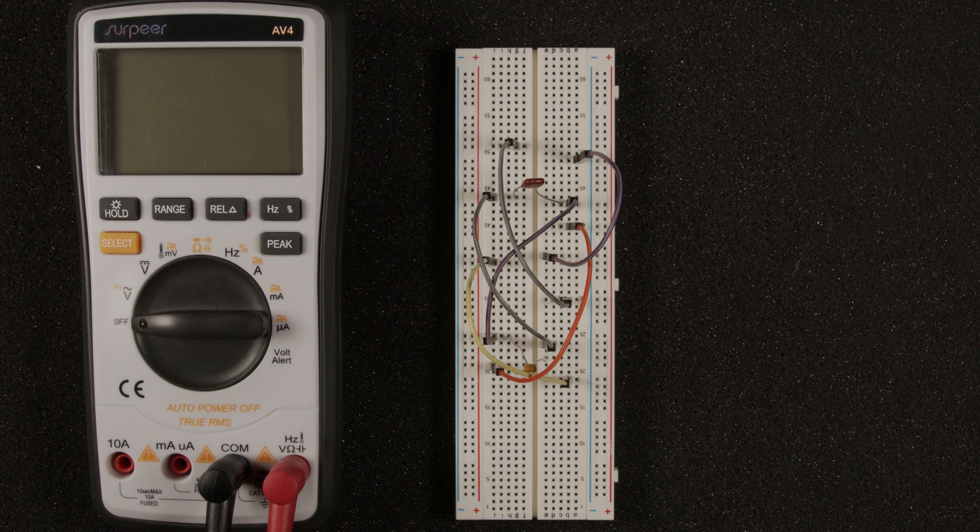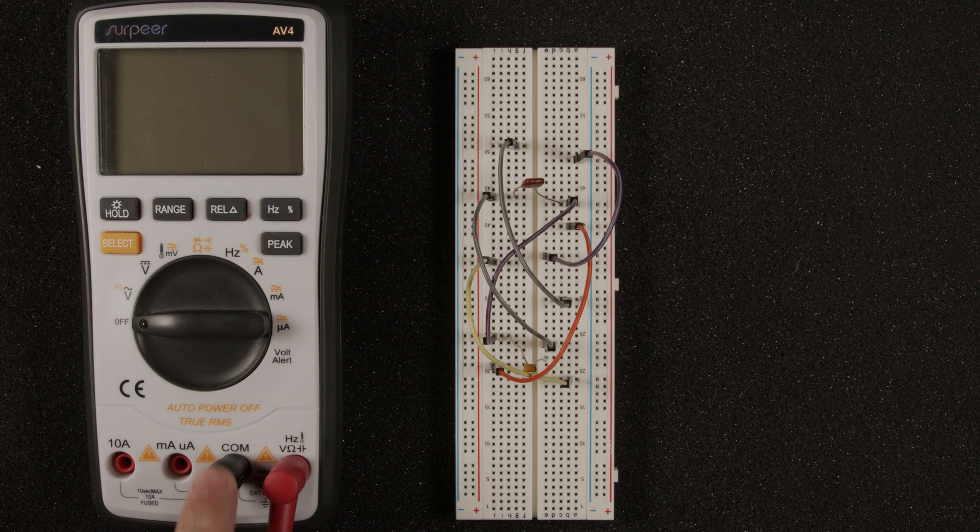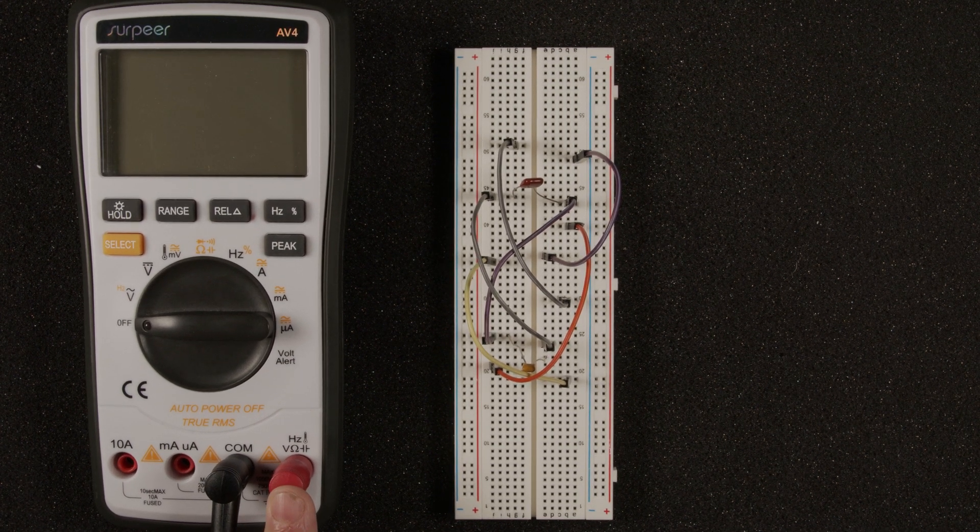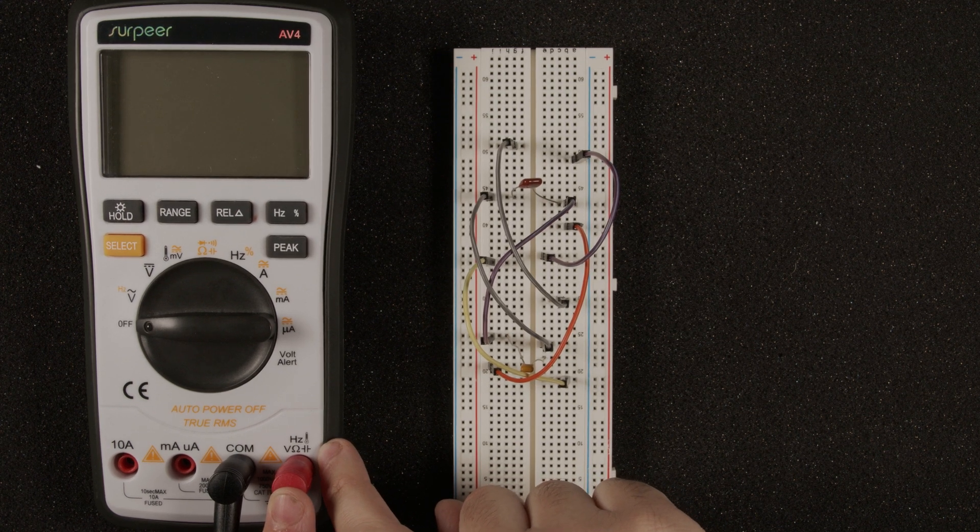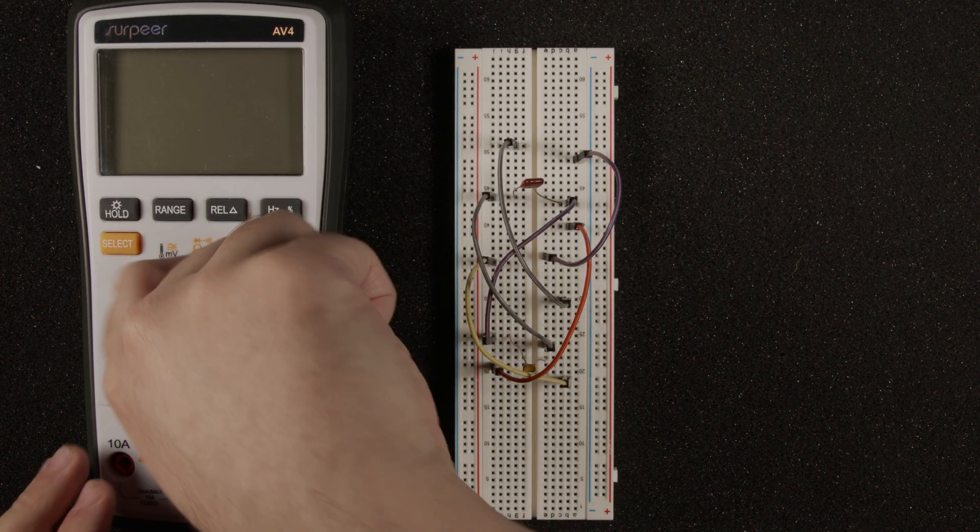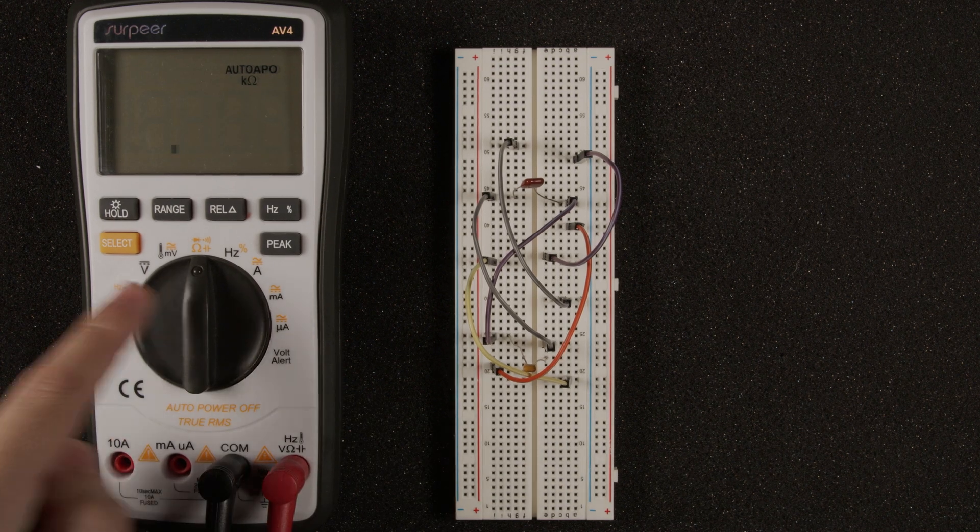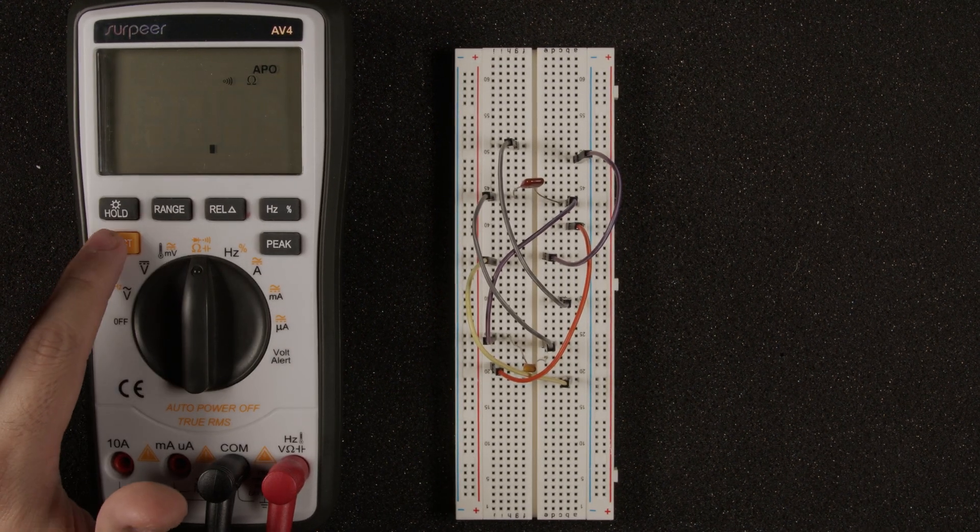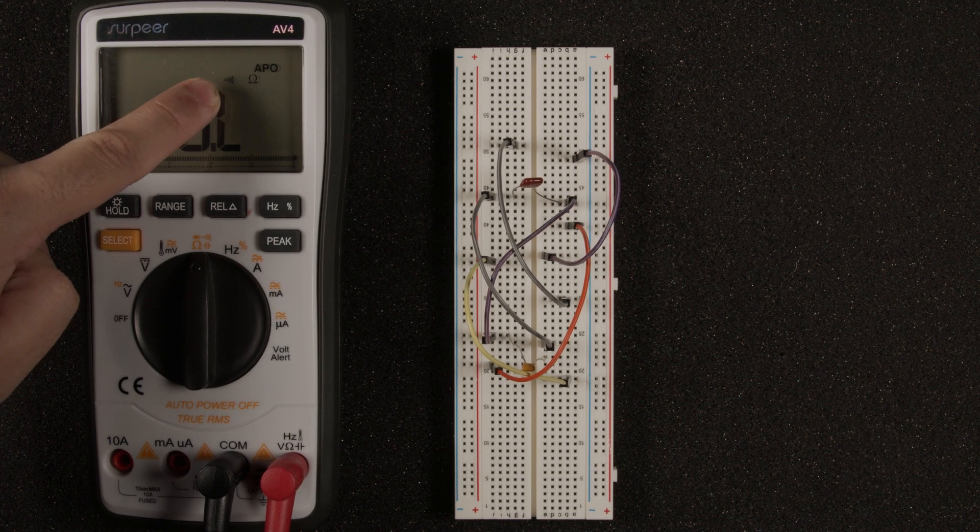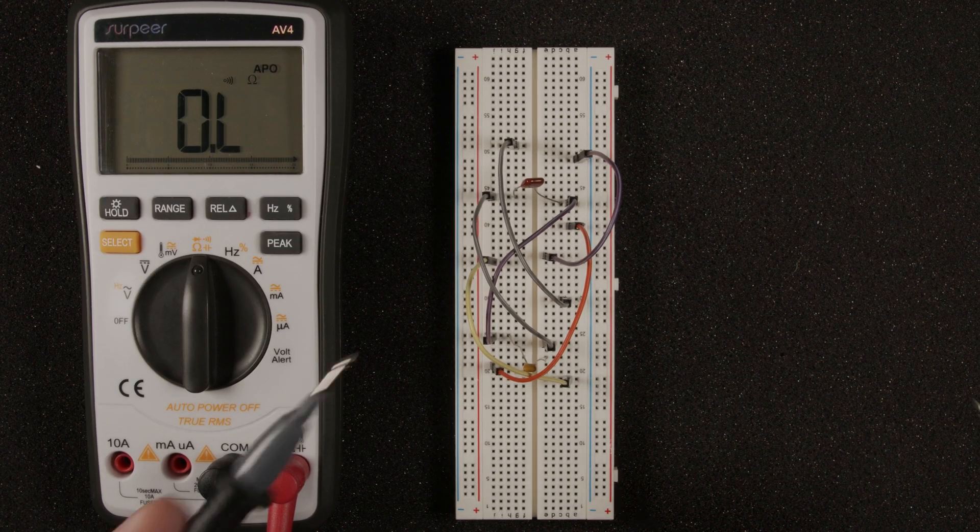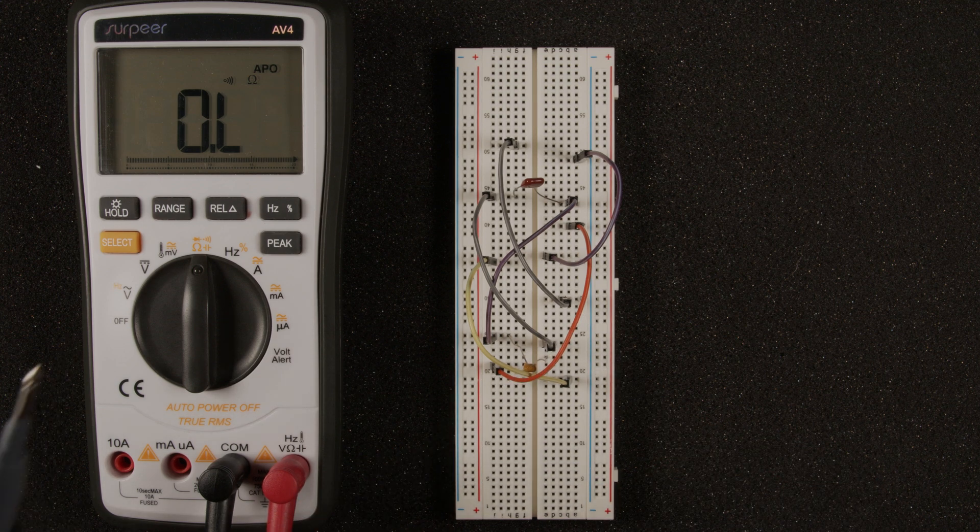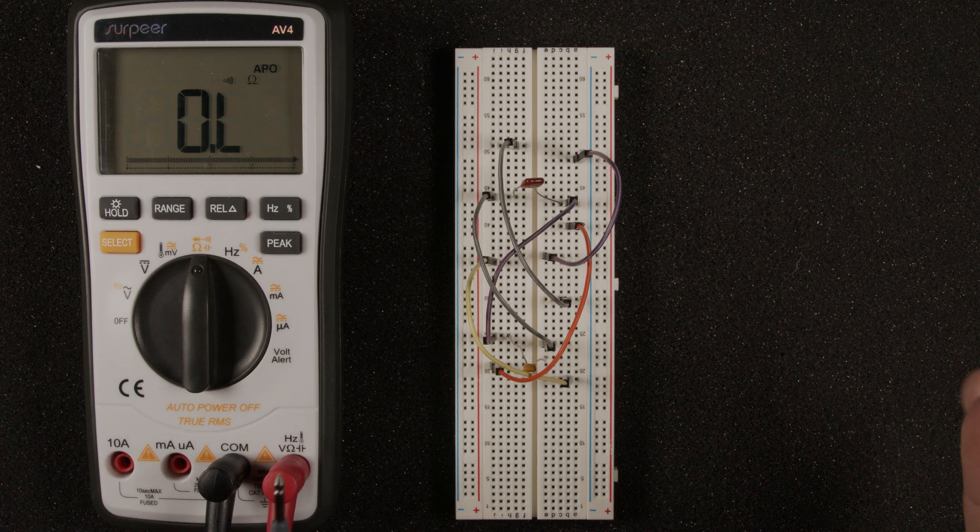First, we need to make sure our probes are connected to the proper terminals. The black always goes to the common ground, and the red is going to be in the same port where we did our resistance measurement. Now to get to the continuity mode, once again, I'm going to turn the dial until we get to where we measured ohms, and for me, I'm going to press it until the little audio icon shows up here, and now if we were to take our two probes and touch them together to make connection, our multimeter will give us a beep sound letting us know that those are connected.